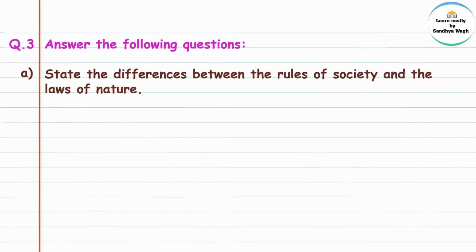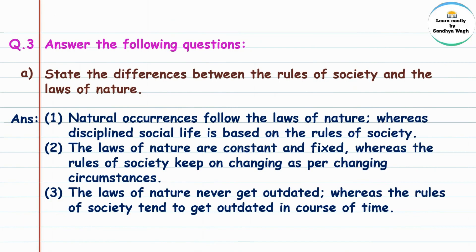Question 3: answer the following questions. State the differences between the rules of society and the laws of nature. Natural occurrences follow the laws of nature, whereas disciplined social life is based on the rules of society. The laws of nature are constant and fixed, whereas the rules of society keep changing as per changing circumstances. The laws of nature never get outdated, whereas the rules of society tend to get outdated in course of time.